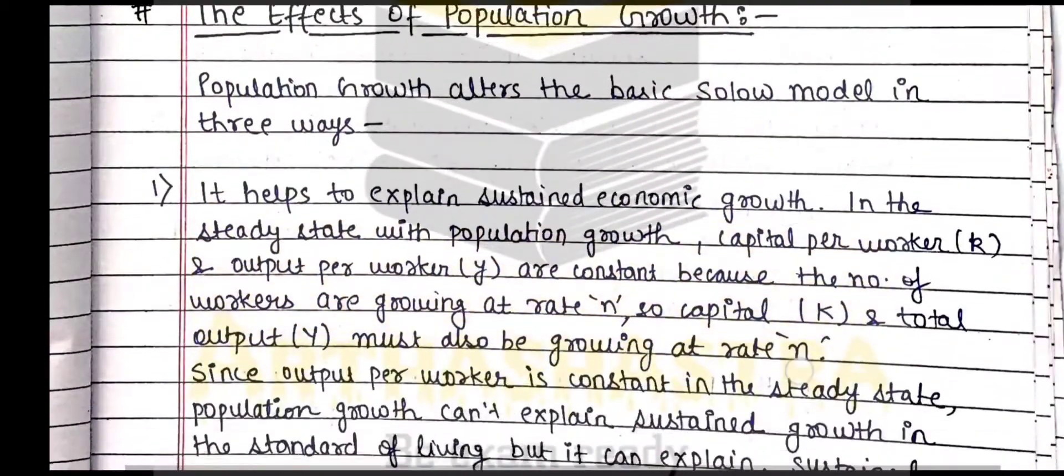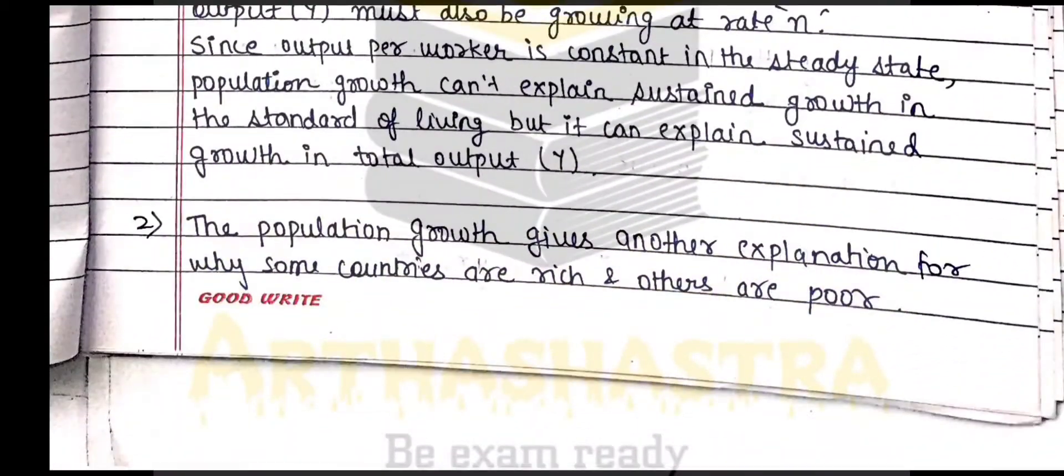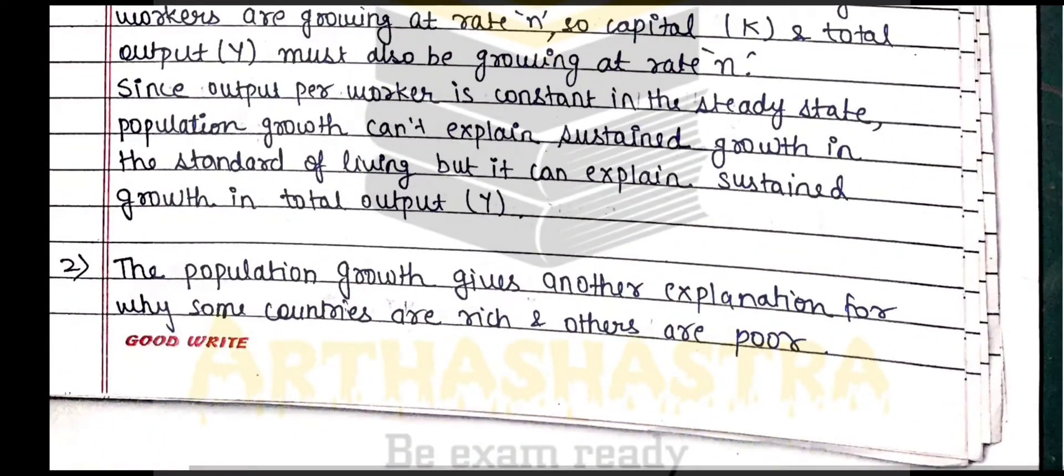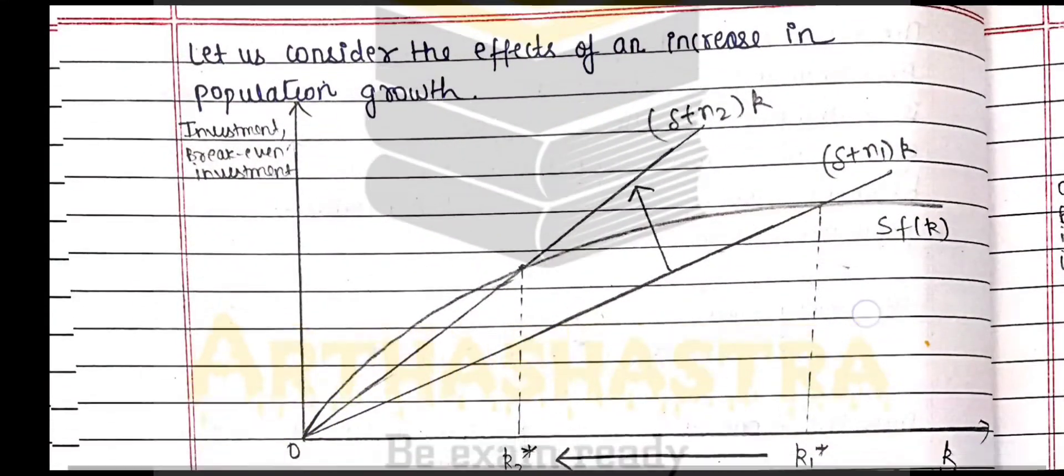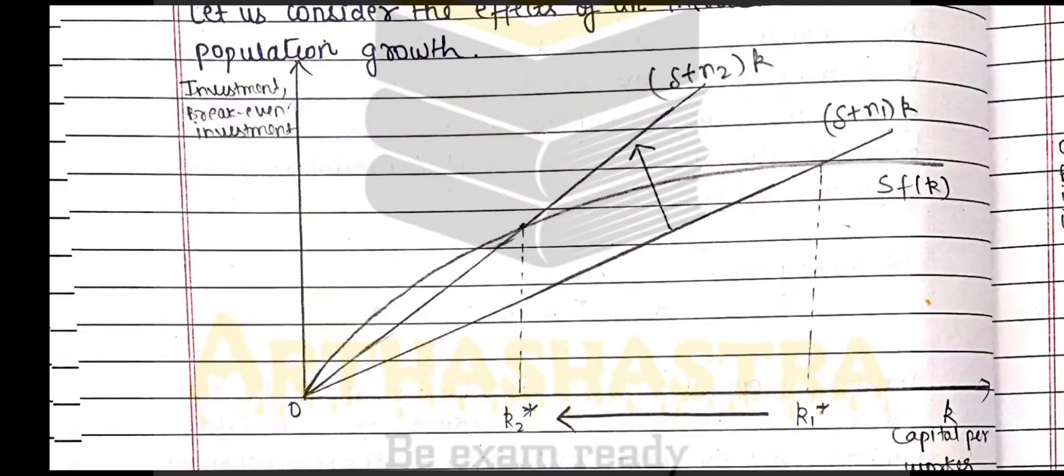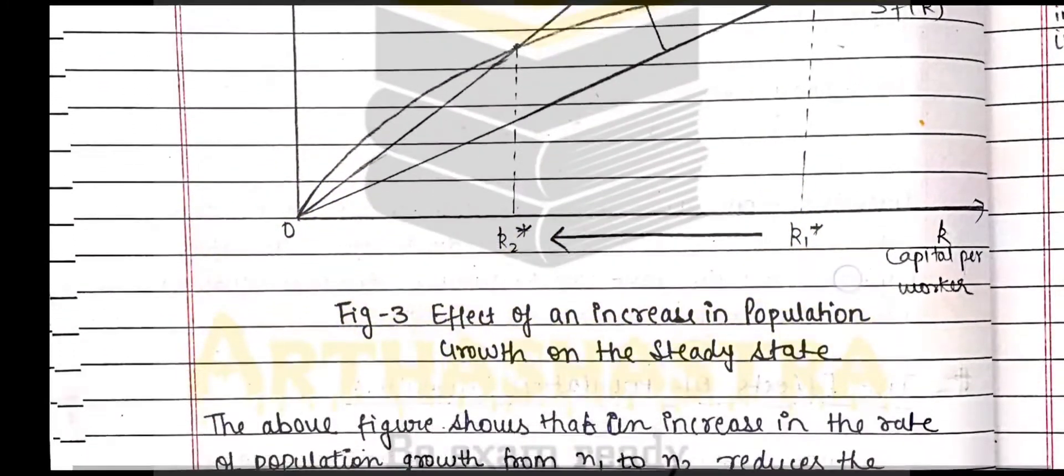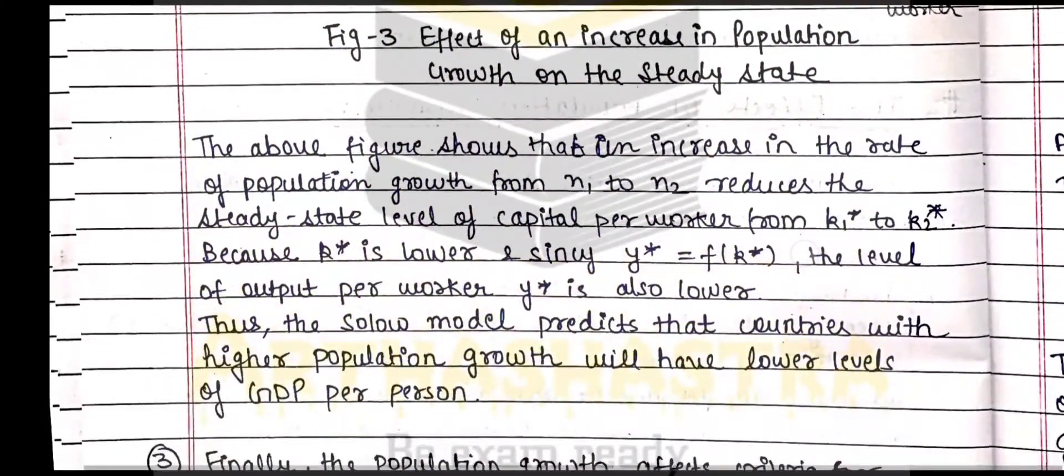Now we are going to see the effects of population growth, and we see when population increases, the steady state capital stock per worker decreases.